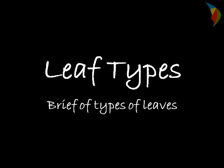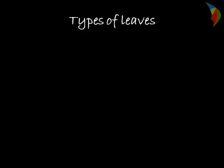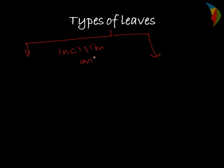Hello friends. Today we will discuss about types of leaf. Based on the incision of the lamina, we can divide leaves into two types. This division of the leaf is based on the incision on the lamina. We can divide into two parts: one is simple leaf and the other is compound leaf.